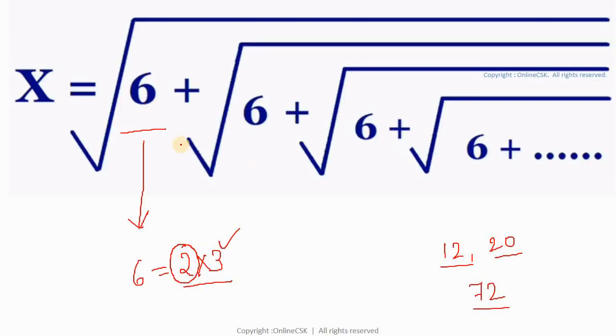If let's say instead of 6, if everywhere there would have been 12, in that case 12 can be written as 3 into 4. I would simply ignore 3 and I'll be left with 4 and 4 would have been the answer.